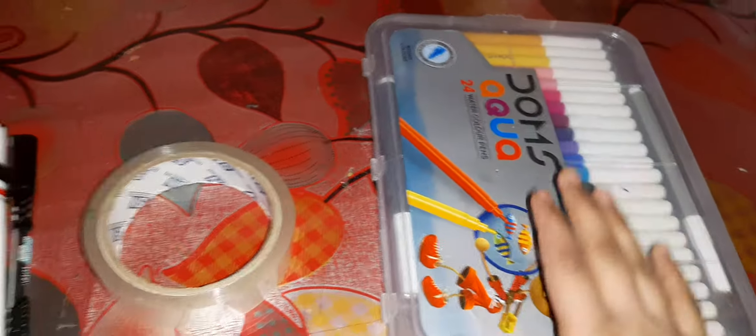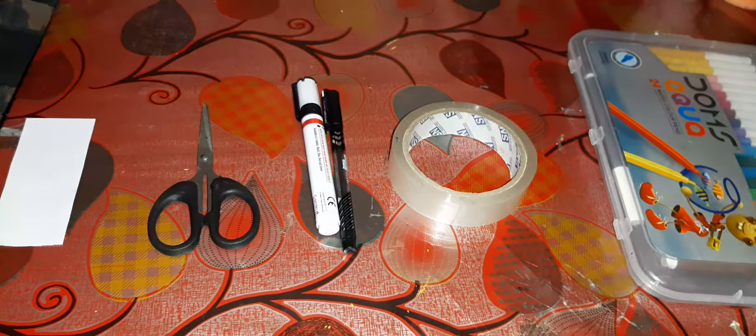Tape and some sketch colors. So let's get started. First, you can take a paper and draw a circle with the help of a tape.